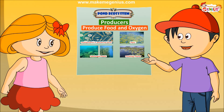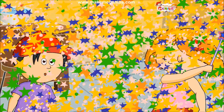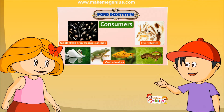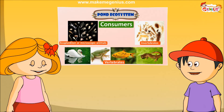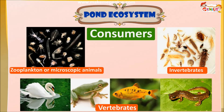Now it is time to make a chart about consumers. I can see fish, frogs, and many other animals. There are many vertebrate and invertebrate animals in the pond. Vertebrates are animals with backbones. In a pond, these might include fish, frog, salamanders, and turtles. And invertebrates are those who don't have backbones.